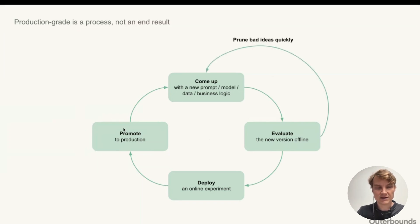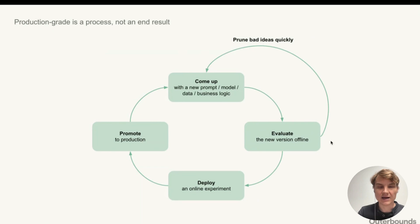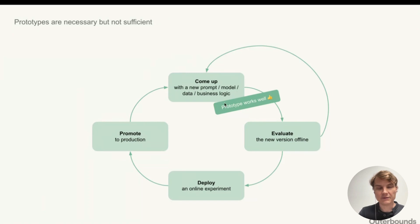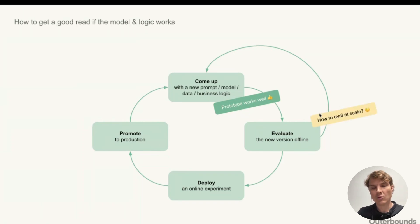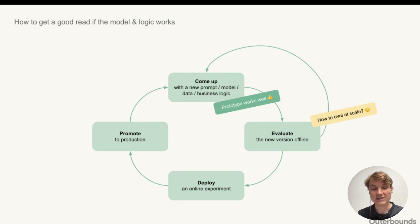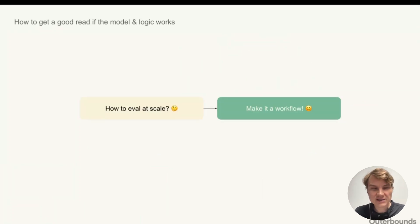Before getting into battle-hardened production, there's always the question of how to disprove bad ideas as quickly as possible and speed up the local development loop — especially with LLMs where you're designing prompts and trying different models. Running a few queries by hand with a local prototype works well, but when dealing with actual datasets of millions of documents, loading PDFs one by one doesn't work at scale. The key challenge is setting up an environment to run evaluations at scale.